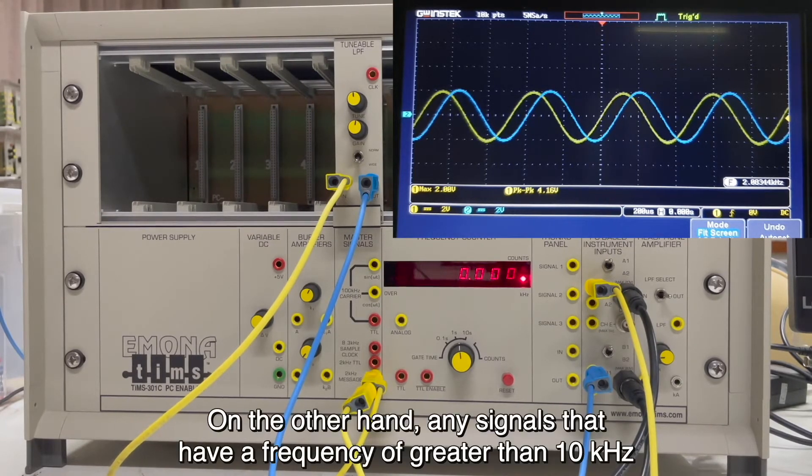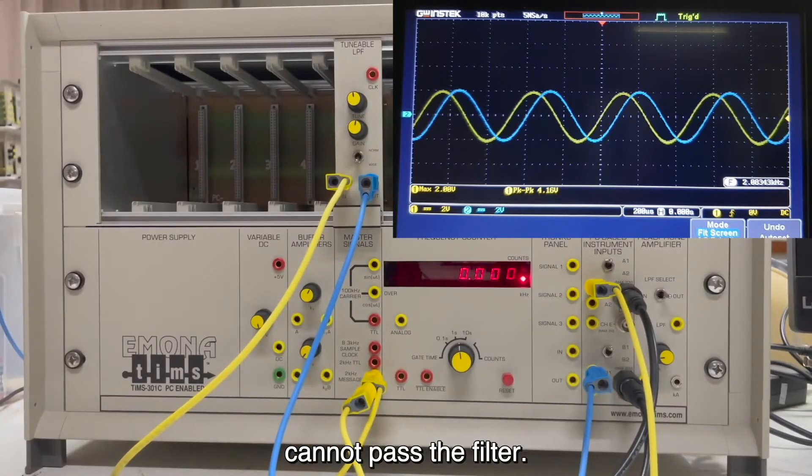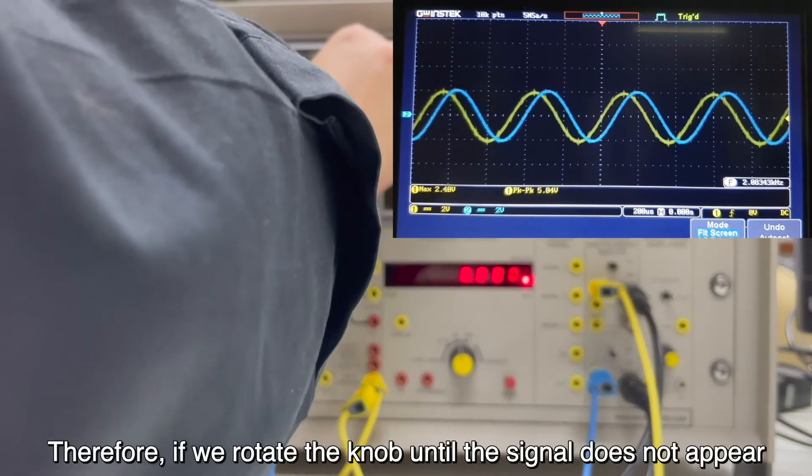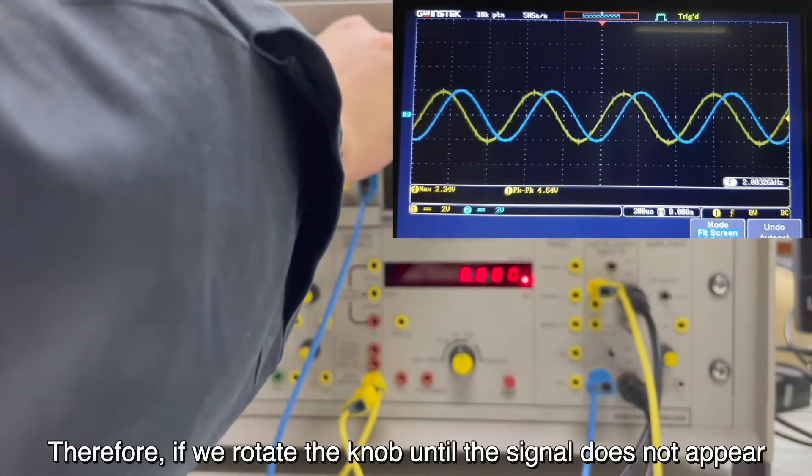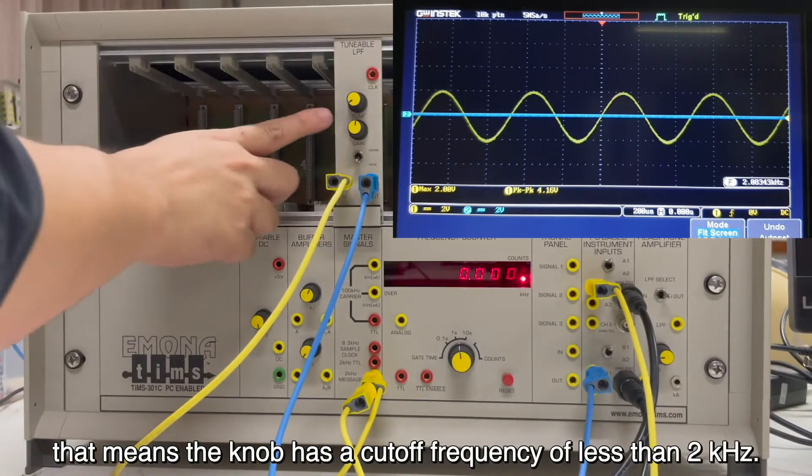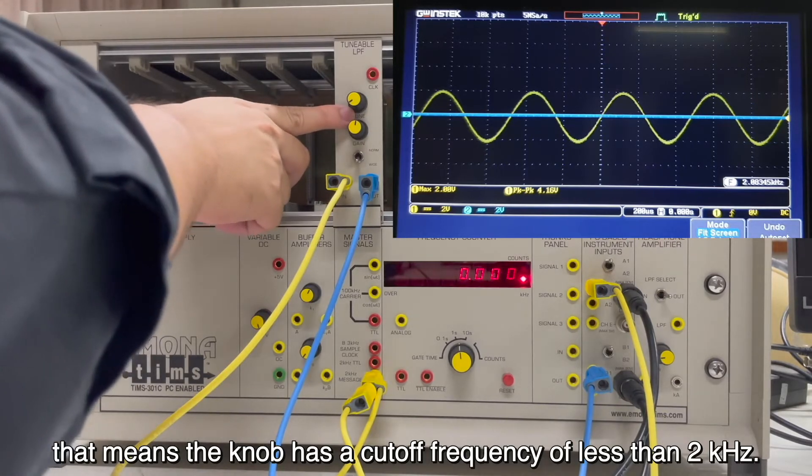On the other hand, any signals that have a frequency greater than 10 kHz cannot pass the filter. Therefore, if we rotate the knob until the signal does not appear, that means the knob has a cutoff frequency of less than 2 kHz.